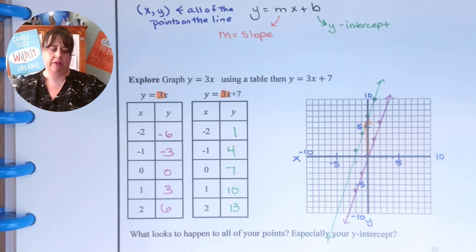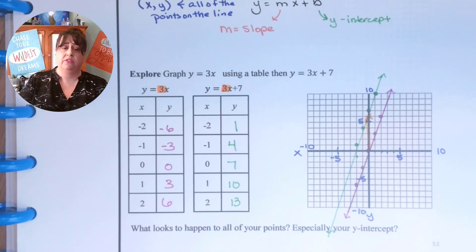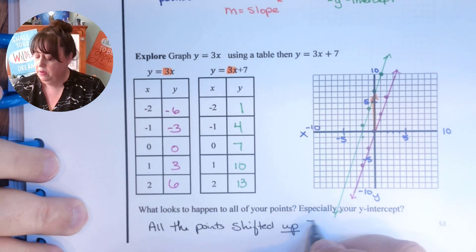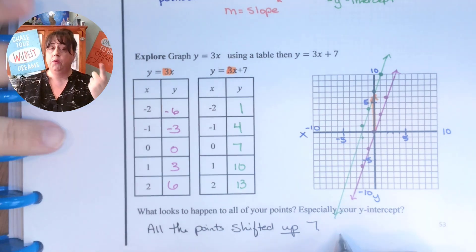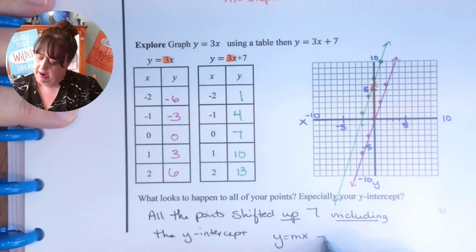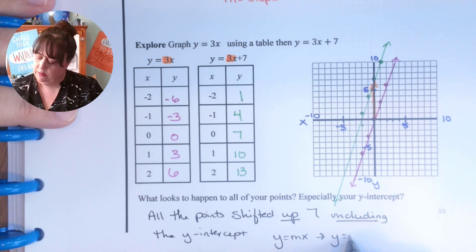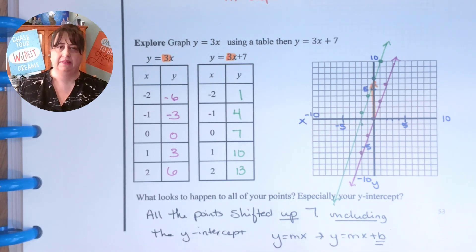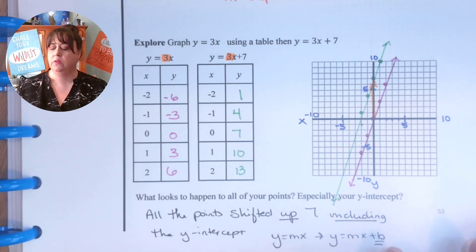So this is really important that we understand that. Whereas all the points shifted up 7, including the y-intercept. Well, do you remember y equals mx from the last one? And now it's y equals mx plus b. That's the difference. Before we started at (0, 0) and now we're going to start at b. That is the whole lesson right there. We last lesson started at (0, 0) and then moved however the slope told us to move. Now we're going to start at b and then move how it told us to move.